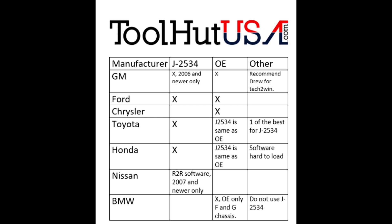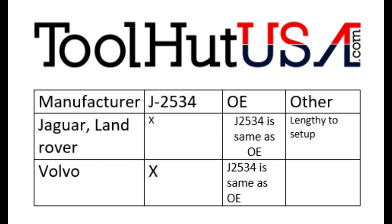A couple of other European manufacturers: Jaguar Land Rover — it's the same as J2534 for the OE software. It does take a while to set up but it works pretty well when done. Same thing with Volvo — Volvo is not so much time-consuming to set up as it is just plain difficult. A J2534 device will work on a lot of manufacturers, but you need to understand the restrictions. I do carry several J2534 devices on the website.